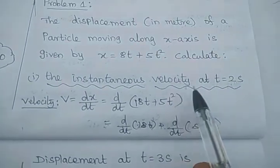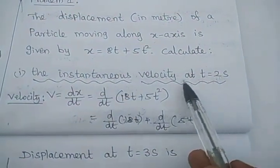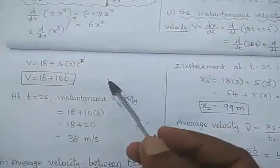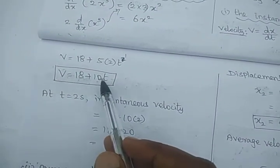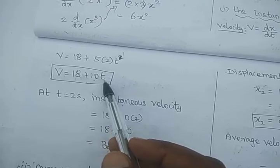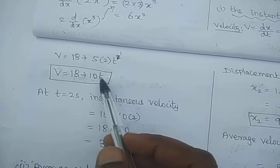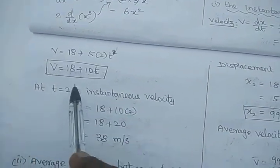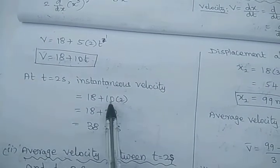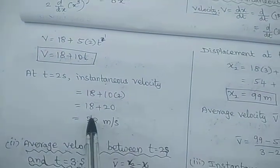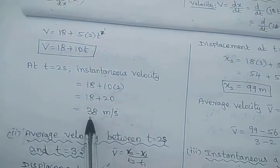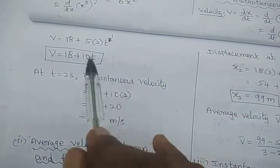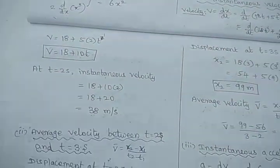The question asks for velocity at time t equals 2 seconds. The velocity equation is v equals 18 plus 10t. Substituting t equals 2: v equals 18 plus 10 times 2, which gives 18 plus 20, equals 38 meters per second. That is the instantaneous velocity at t equals 2 seconds.